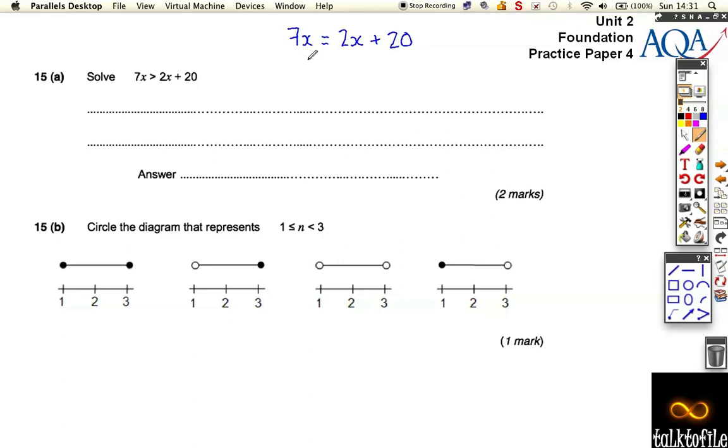If we solve this equation, I'm going to take away 2x on both sides, which leaves me with 5x equals 20. Then I'm going to divide both sides by 5, which leaves me with x equals 4.